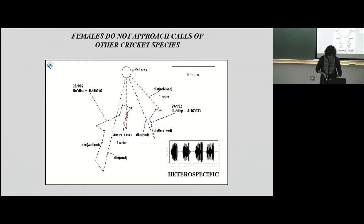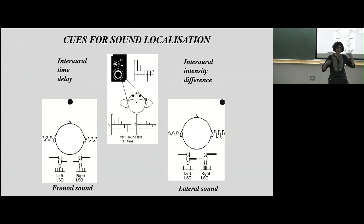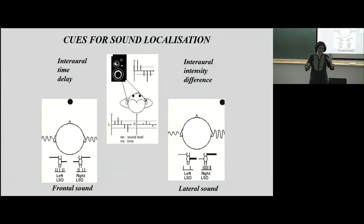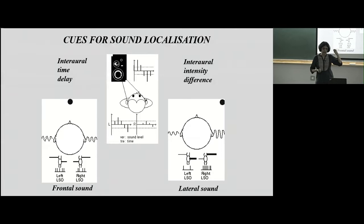So let's go forward. This was proof of principle that females can locate sound. But why is that so interesting? I'll briefly go through how we locate sounds. We perceive sounds using ears, and what they perceive is the amplitude of the pressure wave that impinges on them. There's no inherent directional information in that amplitude signal.